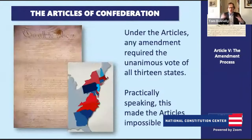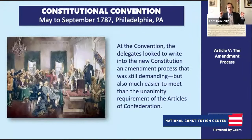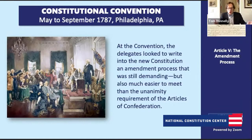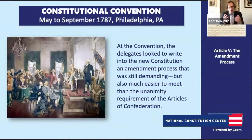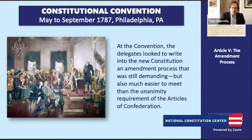Let's go back to the convention and think about why the delegates put this system in place. The big idea was: we want some sort of formal, workable process in the Constitution that allows for amendments, so that everyone knows the rules. They were trying to strike a balance between making the Constitution too easy to amend — which would eliminate constitutional stability and the rules would change all the time — and too hard to amend, where we could learn lessons over time but couldn't write those lessons into the Constitution.